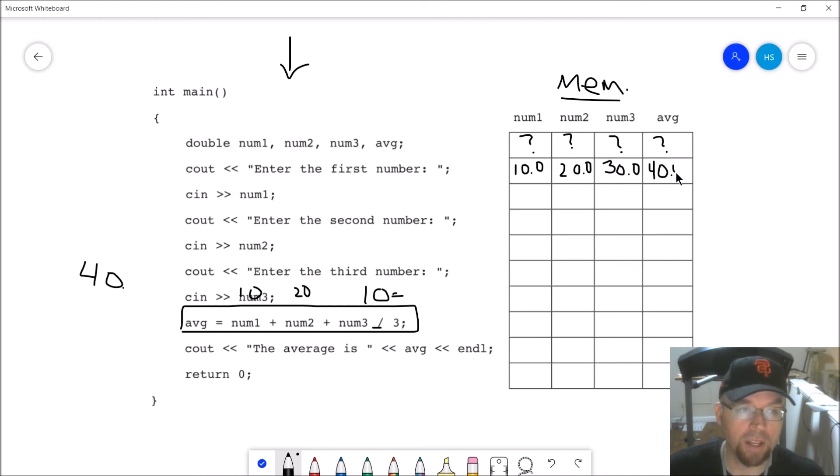And so then what do we see on the screen? The average is 40. So that's the problem. What was the last line that changed the average variable? This one right here. So that's where I would look for my problem. I know that that should result in 20 because 60 divided by 3 is 20. It should not be resulting in 40.